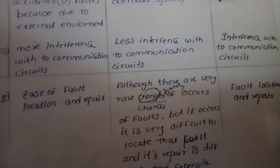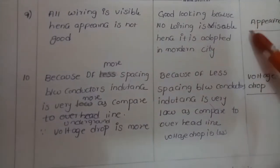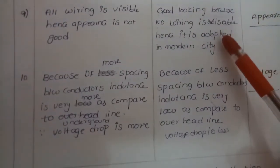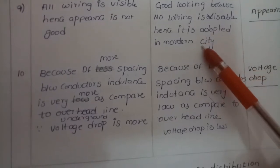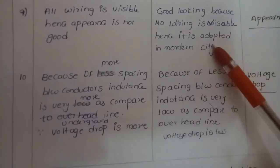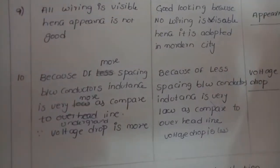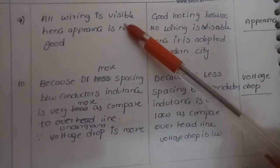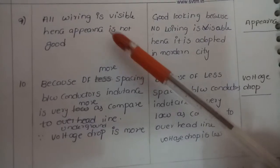Regarding appearance, underground systems look good because no wiring is visible, making them attractive for modern and smart cities. In the case of overhead systems, wiring is visible and therefore the appearance is not as good.